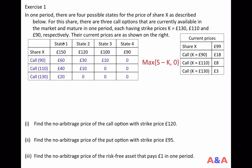For example, if state 1 realizes so that the share price is 150 pounds, the payoff of the call option with strike price 90 is 60 pounds — 150 minus 90. If the strike price is 110 pounds, the value is 40 pounds. If state 3 realizes so that the share price is 100 pounds, the value of the call option with K=90 will be 10 pounds, and the other two call options will be worthless.